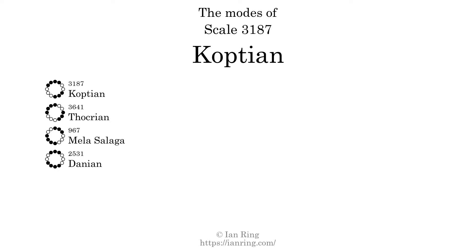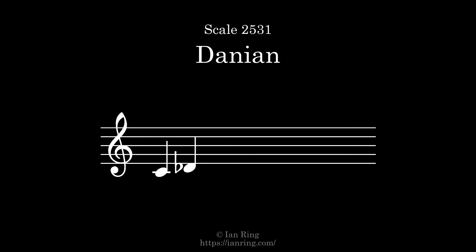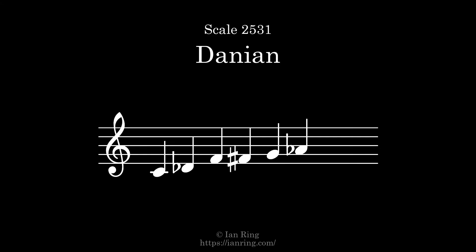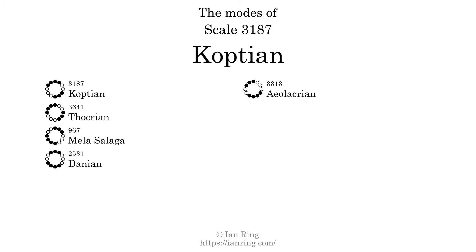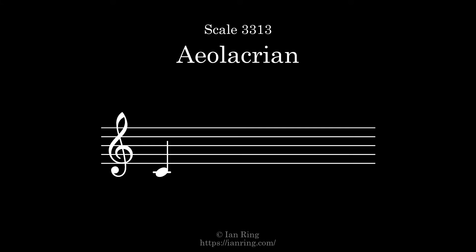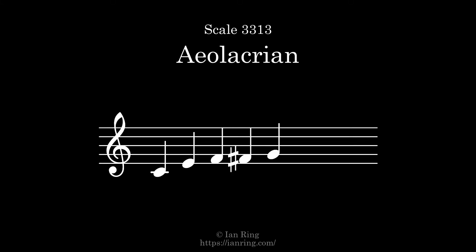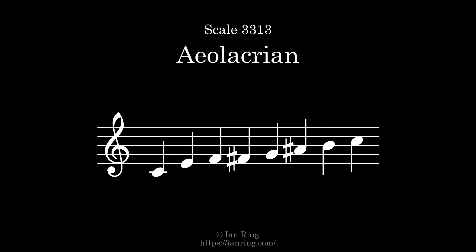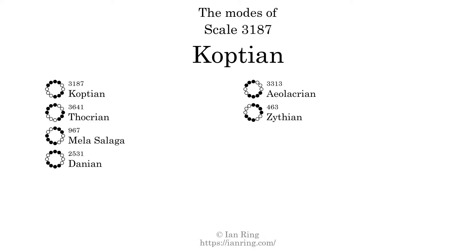The fourth mode is scale 2311, also known as Iolacrian. It sounds like this. The fifth mode is scale 3313, also known as Mela Seliga. It sounds like this. The 6th mode is scale 463, also known as Zythian. It sounds like this.